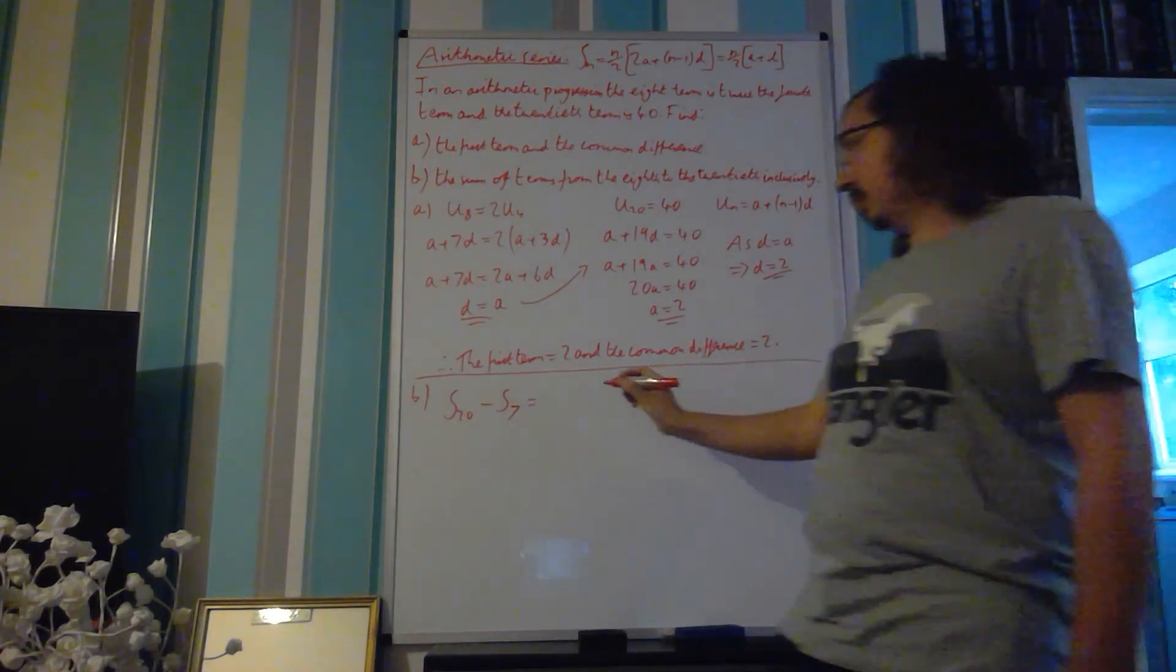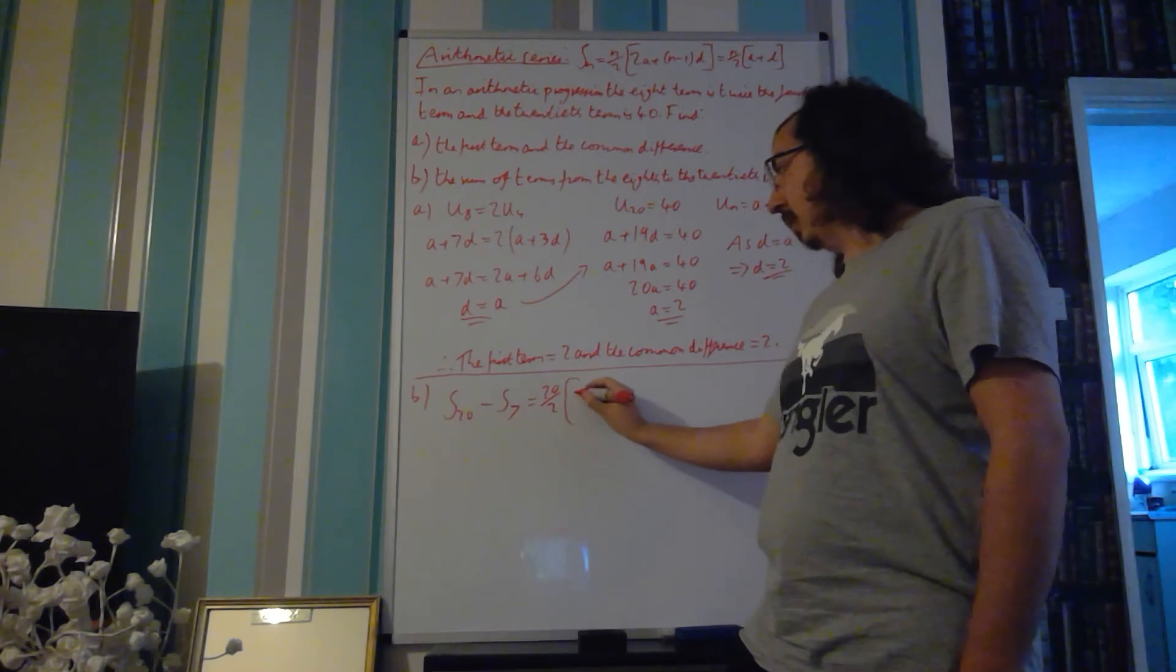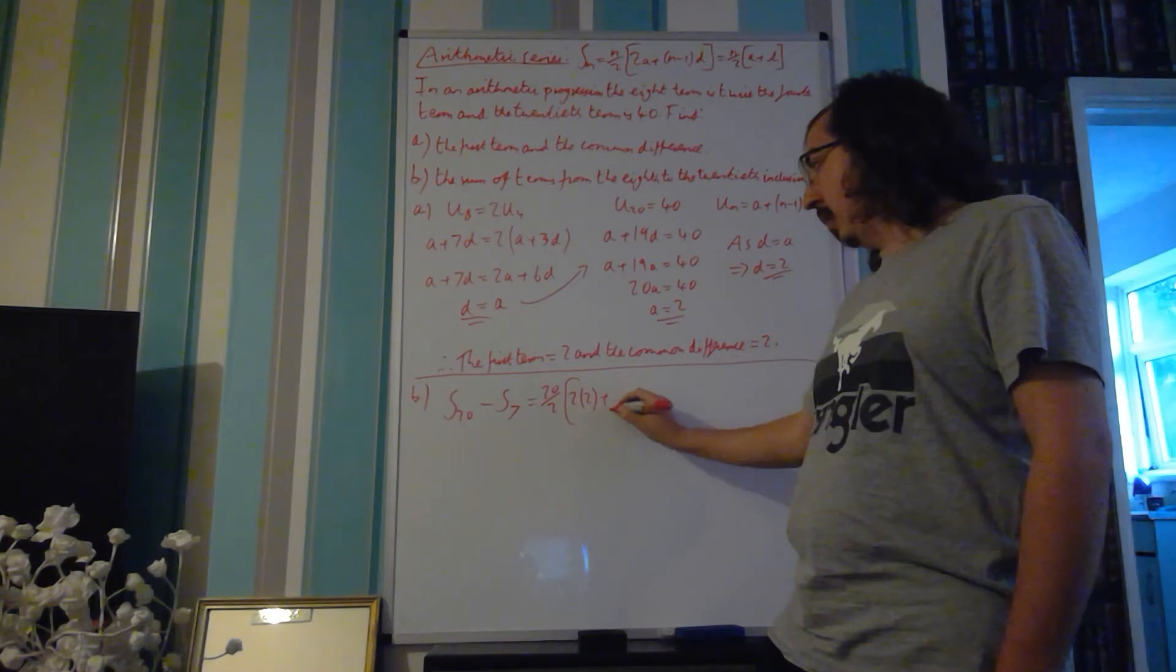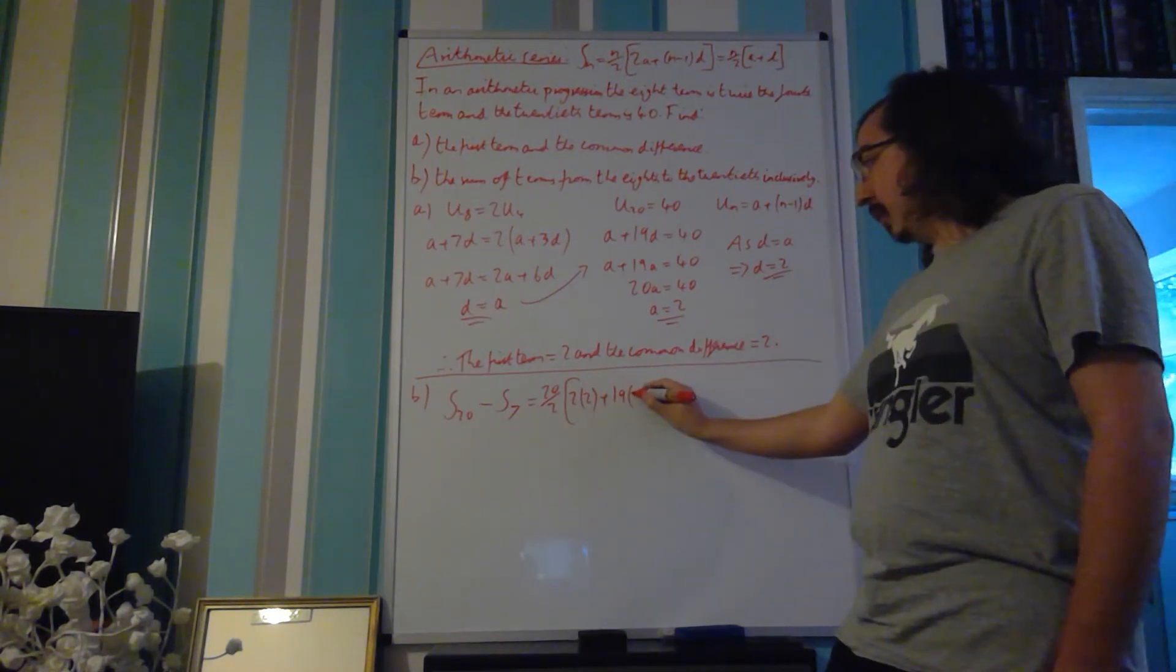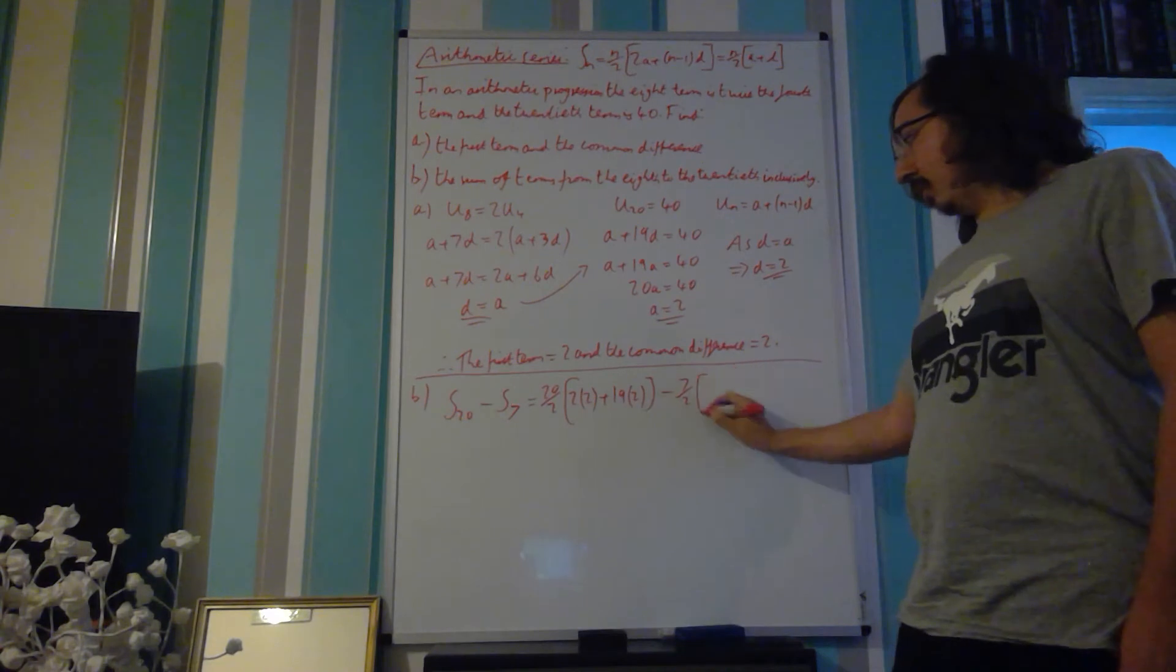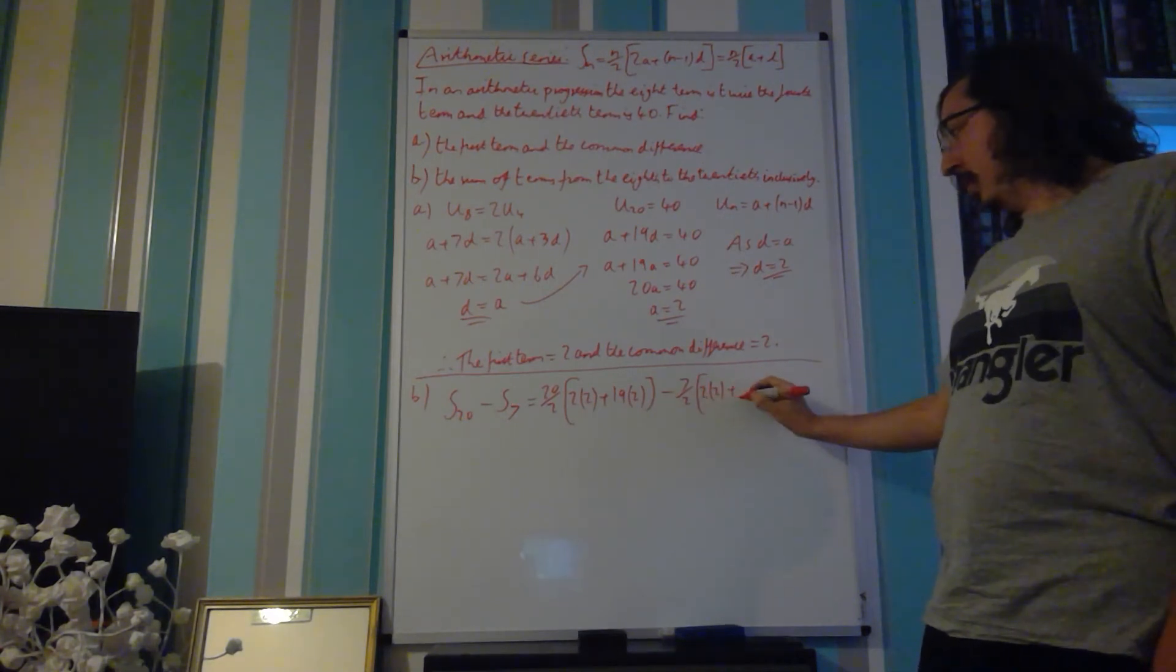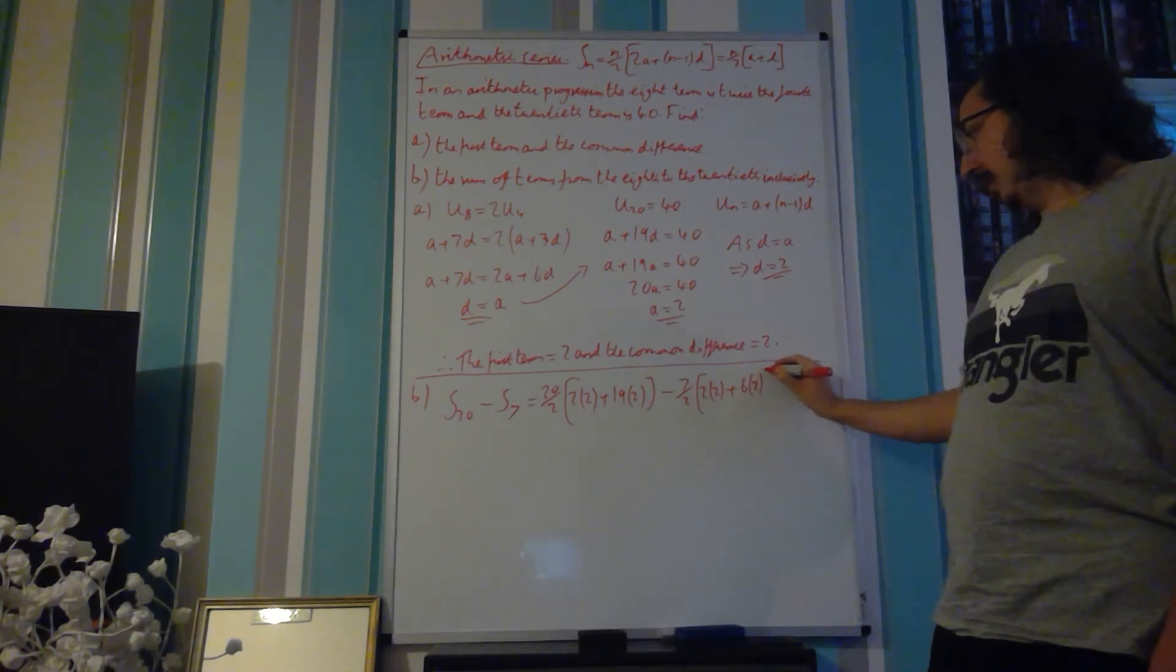So, for our summation of 20, we have 20 over 2 times 2 times our A value, which is 2, plus 20 minus 1, which is 19, times our D value, which is 2, subtract 7 over 2 times 2 times 2, plus 7 minus 1, which is 6, times our D, which is 2.